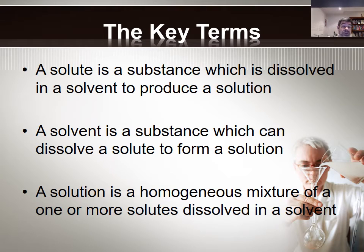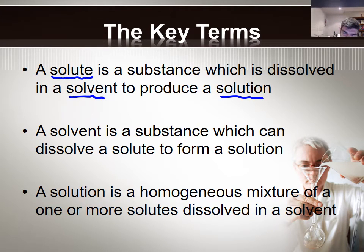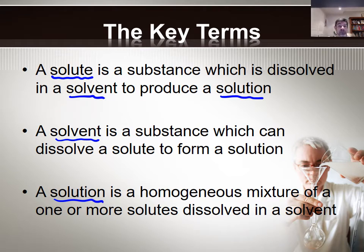There are three key terms that we need to be aware of here. The first is a solute — a substance which will dissolve in a solvent to produce a solution. One of the problems with defining these three terms is that we tend to use each to describe the others. The important thing about the solute is that it's the substance in the smaller amount, and there can be more than one solute. The solvent is the substance which can dissolve the solute to form the solution. The solution itself is a homogeneous mixture of one or more solutes dissolved in a solvent. We can describe the ocean as a solution — it has more than one solute dissolved in it, and the solvent for the ocean would be water.